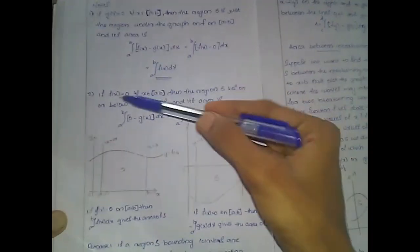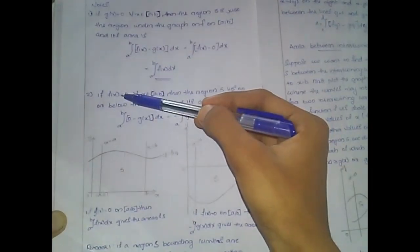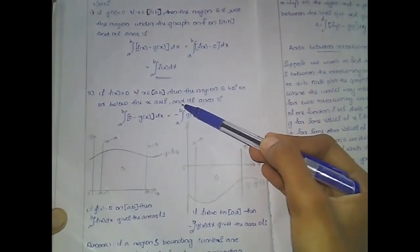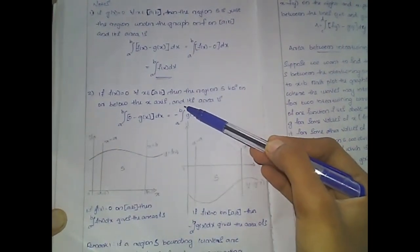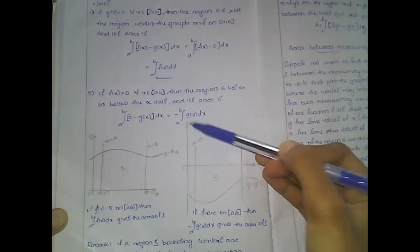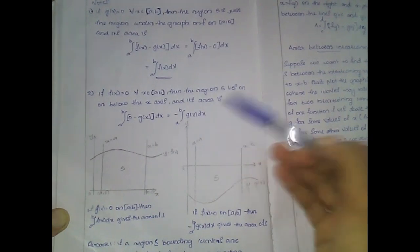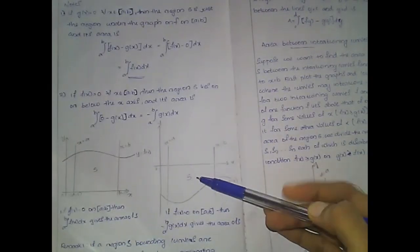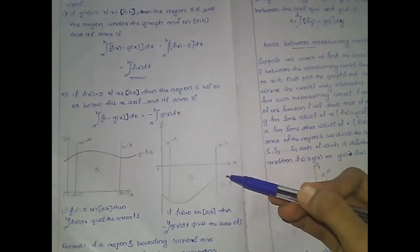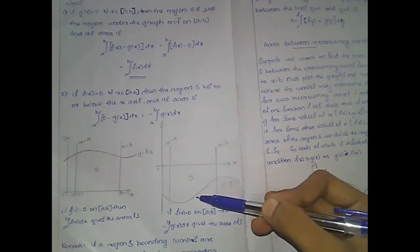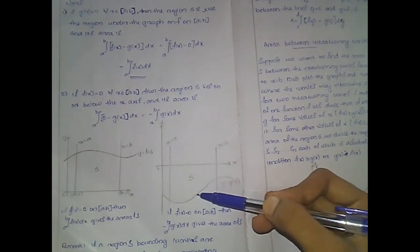The next case is: if f(x) equals 0, then the region S lies below the x-axis and its area is given by minus the integral from a to b of g(x) dx. That is, the area of the region S lies below the x-axis.